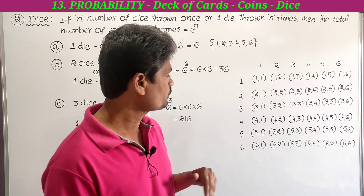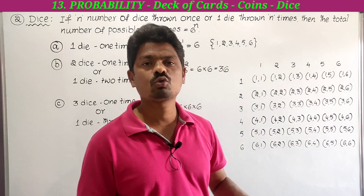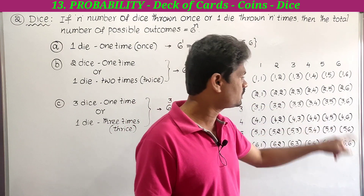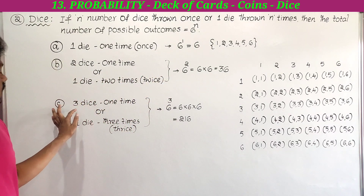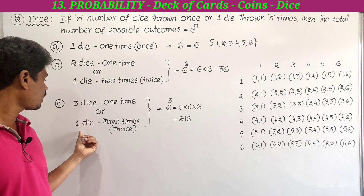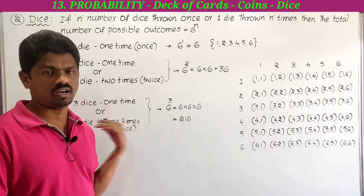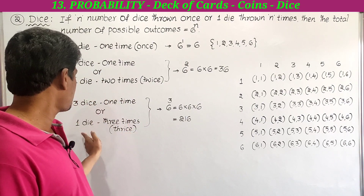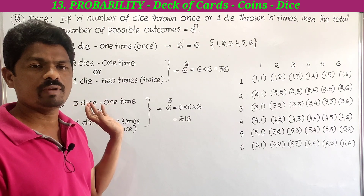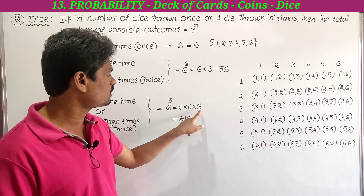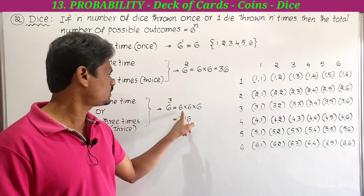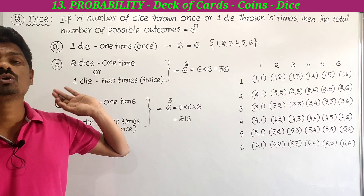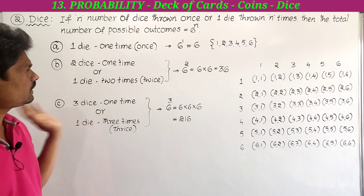If 3 dice are thrown one time, or 1 die is thrown 3 times (thrice), both are treated as the same experiment. Here n equals 3, so the total number of possible outcomes is 6 to the power 3, which is 6 into 6 into 6. 6 into 6 is 36, and 36 into 6 is 216. So the total number of possible outcomes is 216.